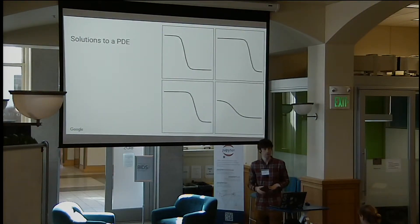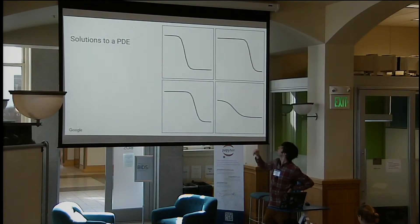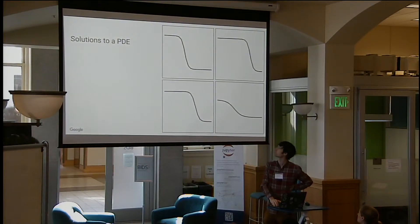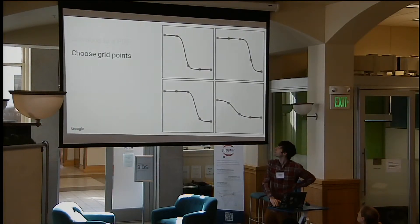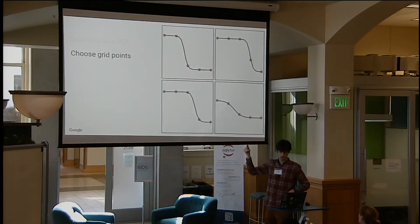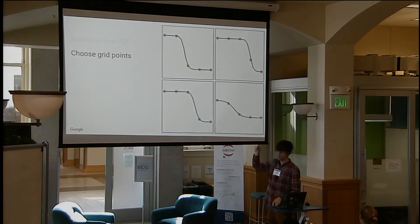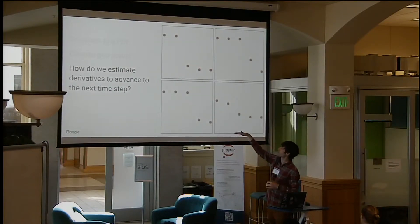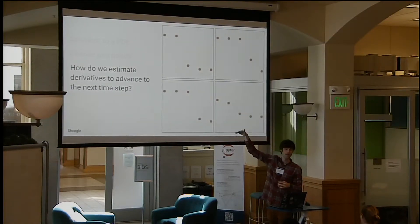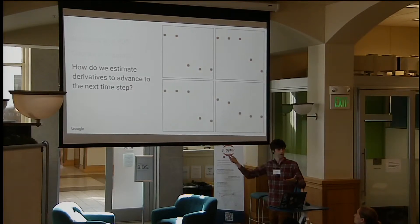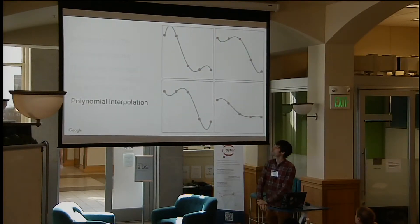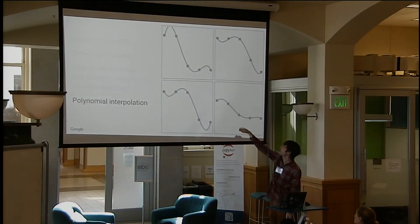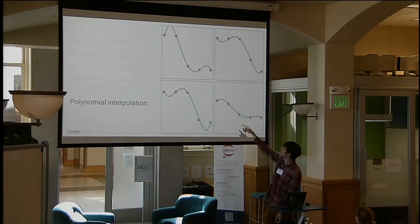Let me walk through a simple example. Here are some example curves from Burger's equation, which I think was mentioned earlier. To solve this equation, you pick a grid — some uniformly spaced points. The challenge is we have to reconstruct the curve to estimate derivatives, apply the equation, and go to the next time step. If you draw a polynomial curve through these points, you get these extra oscillations — it's smooth, but not accurate.